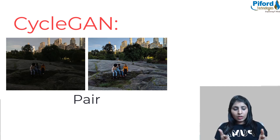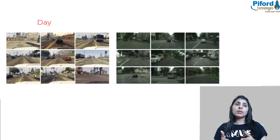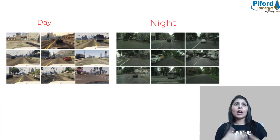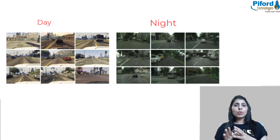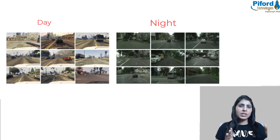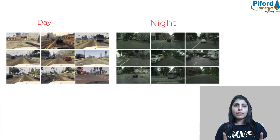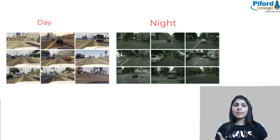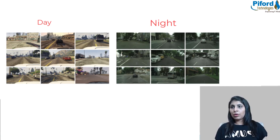CycleGAN is trained on unsupervised data. By unsupervised data, it simply means if you want to translate nighttime into daytime, you need two separate folders: one folder will have nighttime images and the other folder will have daytime images, and they can be any random images. We don't need paired images.